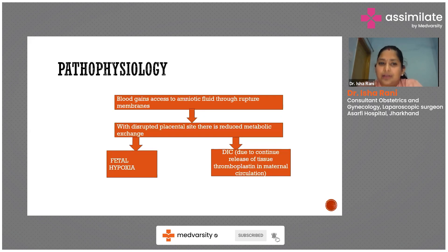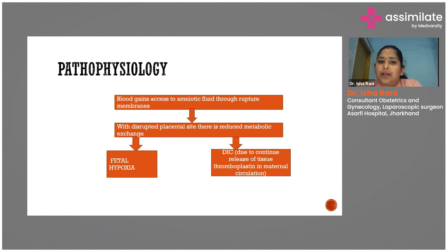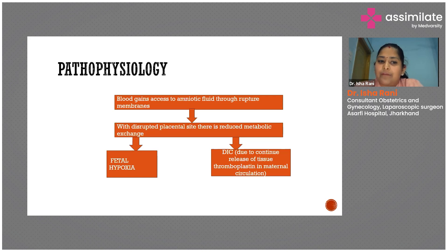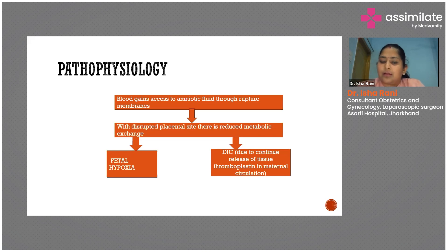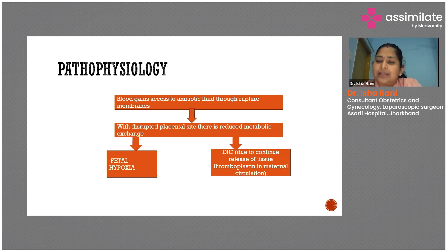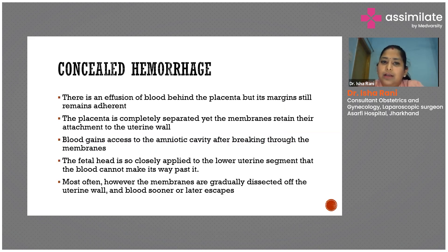As seen in this flowchart, once blood gains access into the amniotic fluid after rupture of membranes, the placental side gets disrupted and the metabolic exchanges important for fetal well-being are reduced, causing fetal hypoxia leading to fetal compromise and subsequently fetal demise if not tackled on time. As bleeding continues, there is a continued release of tissue thromboplastin into maternal circulation, which can lead to DIC. DIC is the most dreaded complication in placental abruption.